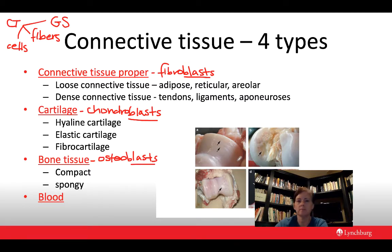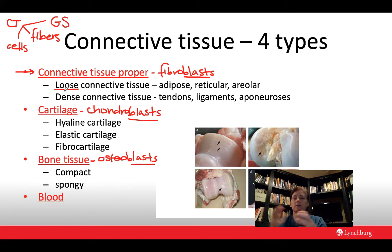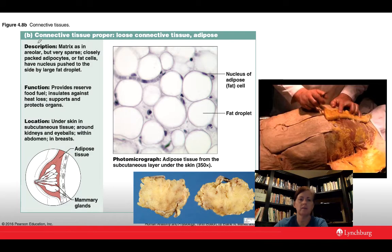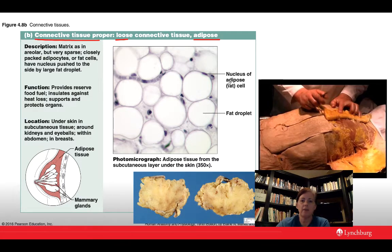Let's run through some specific connective tissues. The first is under the category of connective tissue proper, which can be divided into loose or dense. The first type of loose connective tissue is adipose tissue — basically fat. You'll see adipose cells embedded within this connective tissue: large, round cells filled with fat.